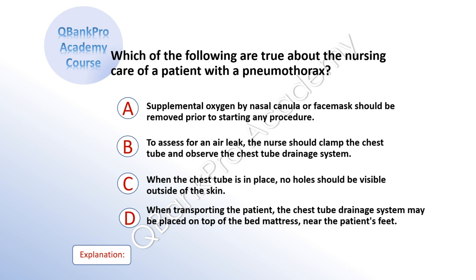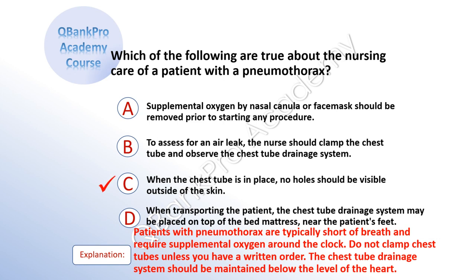Which of the following are true about the nursing care of a patient with a pneumothorax? A, supplemental oxygen by nasal cannula or face mask should be removed prior to starting any procedure. B, to assess for an air leak, the nurse should clamp the chest tube and observe the chest tube drainage system. C, when the chest tube is in place, no holes should be visible outside of the skin. D, when transporting a patient, the chest tube drainage system may be placed on top of the bed mattress near the patient's feet. The correct answer is C. Explanation: Patients with pneumothorax require supplemental oxygen around the clock. Do not clamp chest tubes unless you have a written order. The chest tube drainage system should be maintained below the level of the heart.